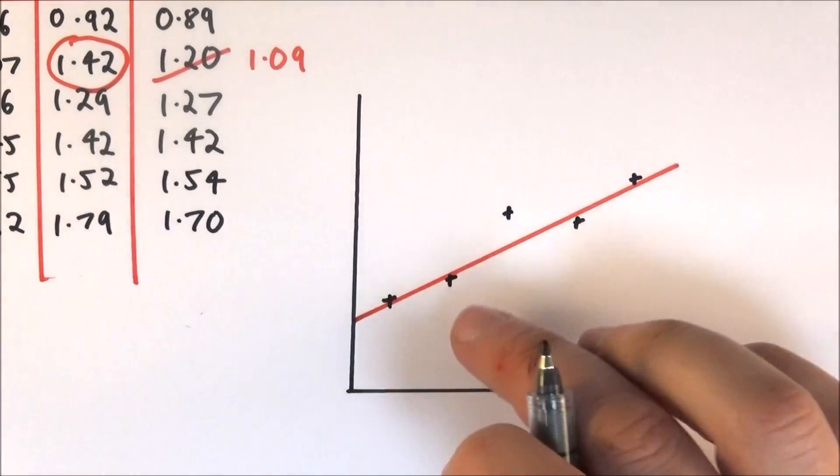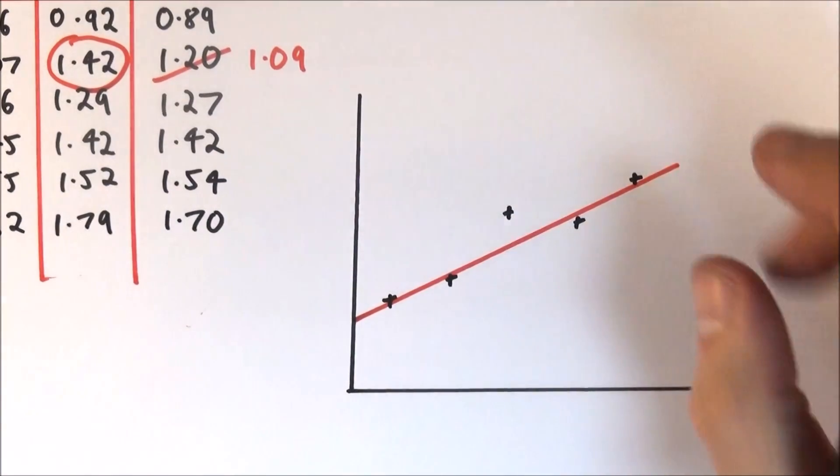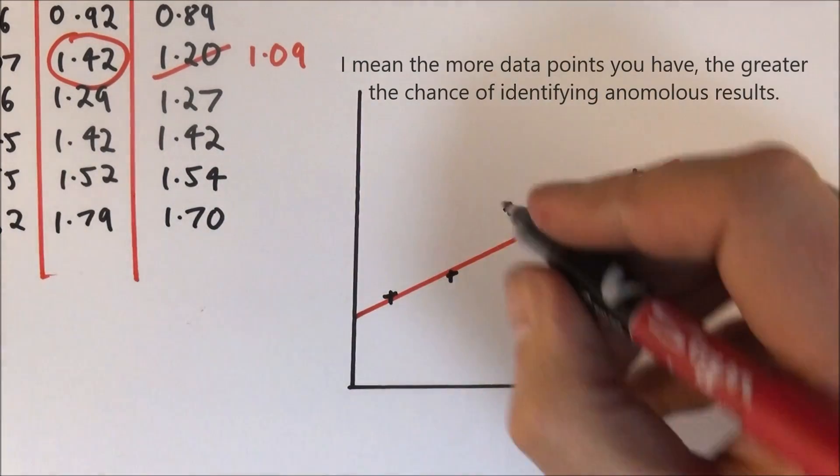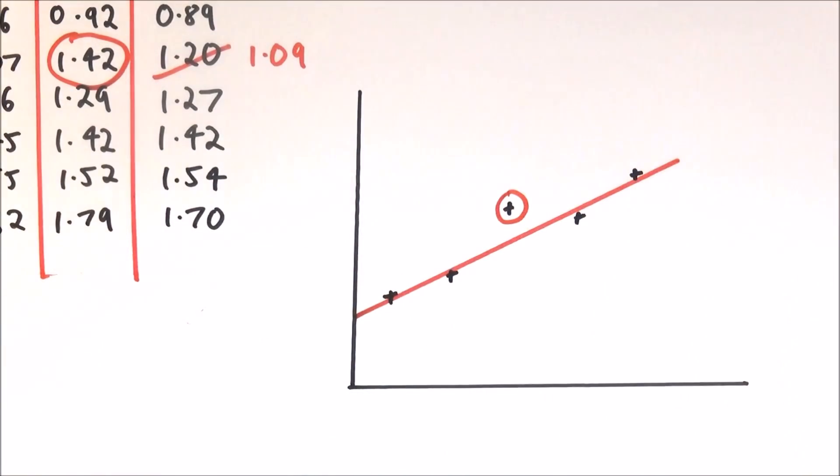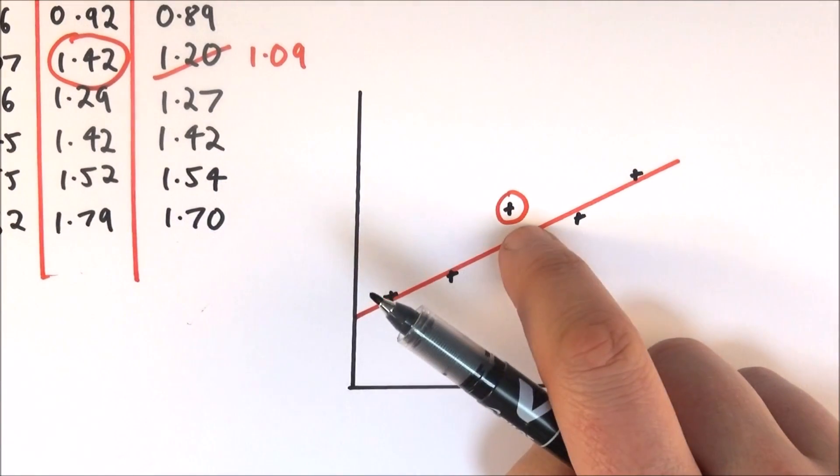So anomalous results are really ones that don't fit the pattern of data, and that's why the more data points that you have, the more chance you have of seeing an anomalous result. But if you do get one, it's nothing to worry about. It's just worth maybe circling it, identifying it, and then you can move on and maybe talk about this later in a discussion.